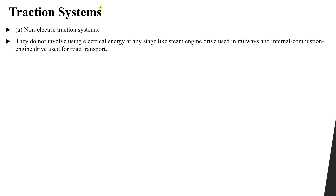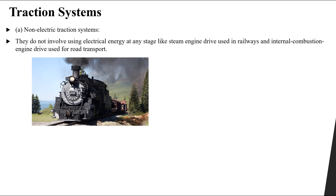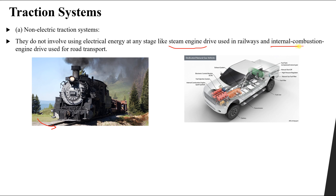This type of system does not involve using electricity or electrical energy at any stage — like the steam engine drive used in railways or the internal combustion engine used for road transport. As you can see here, this is a very old historical steam train that uses steam to provide the mechanical power to push the train through the railway. It does not use any type of electricity. The steam engine uses boiled water — steam — to drive a turbine.